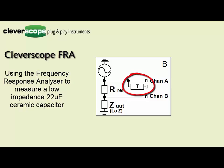Channel A is terminated so that the signal generator sees the correct termination value but channel B is not because the unit under test is such a low impedance.